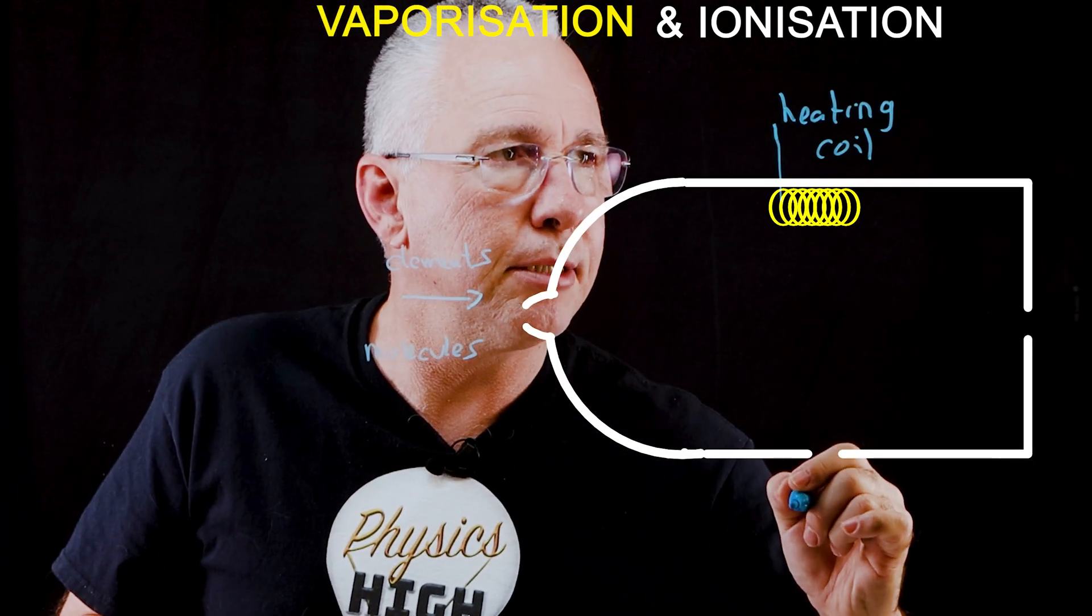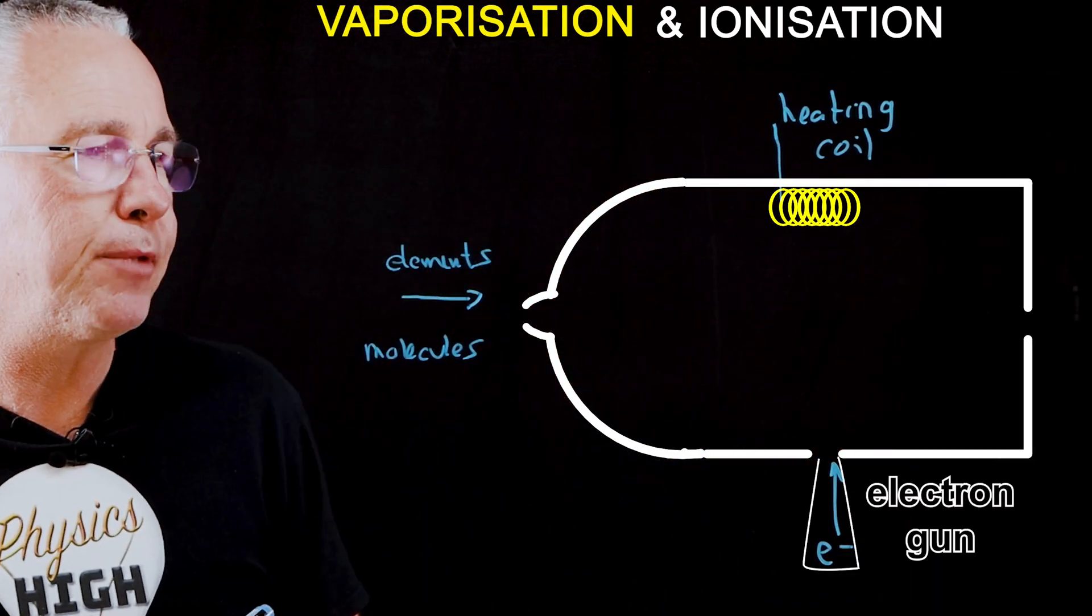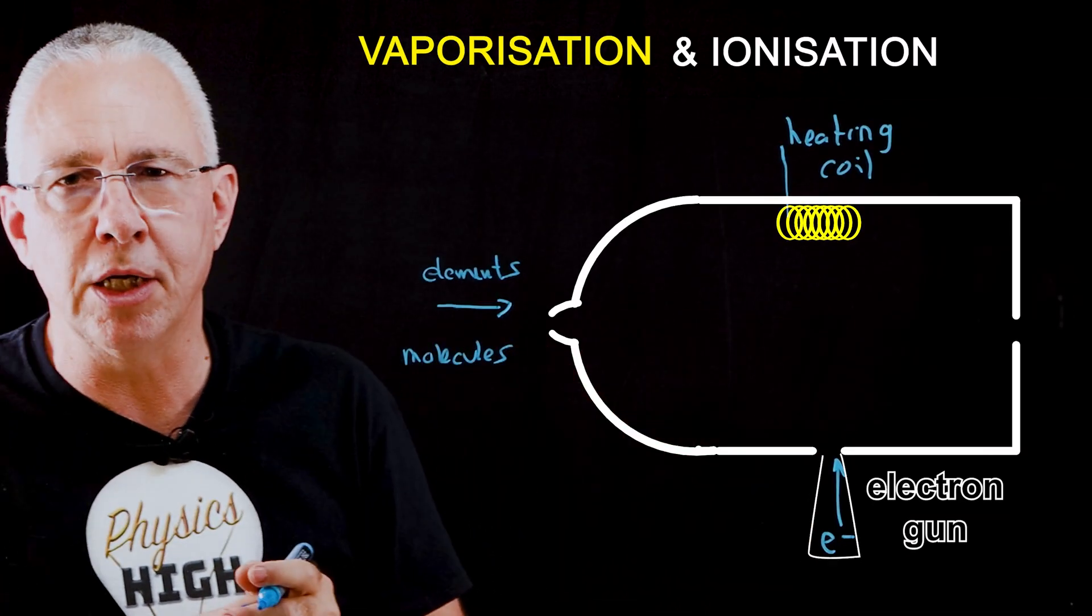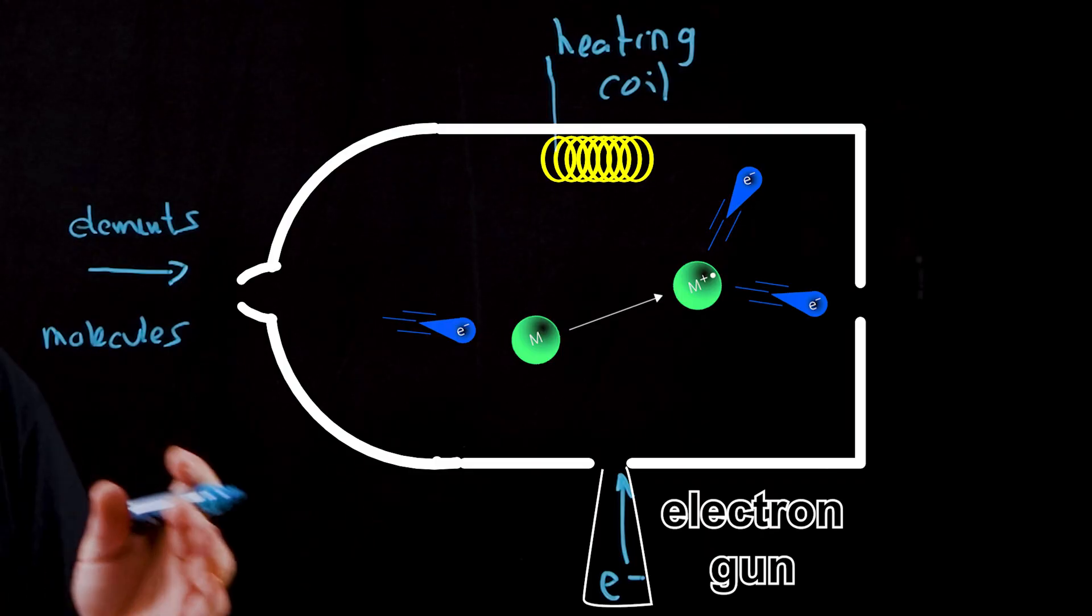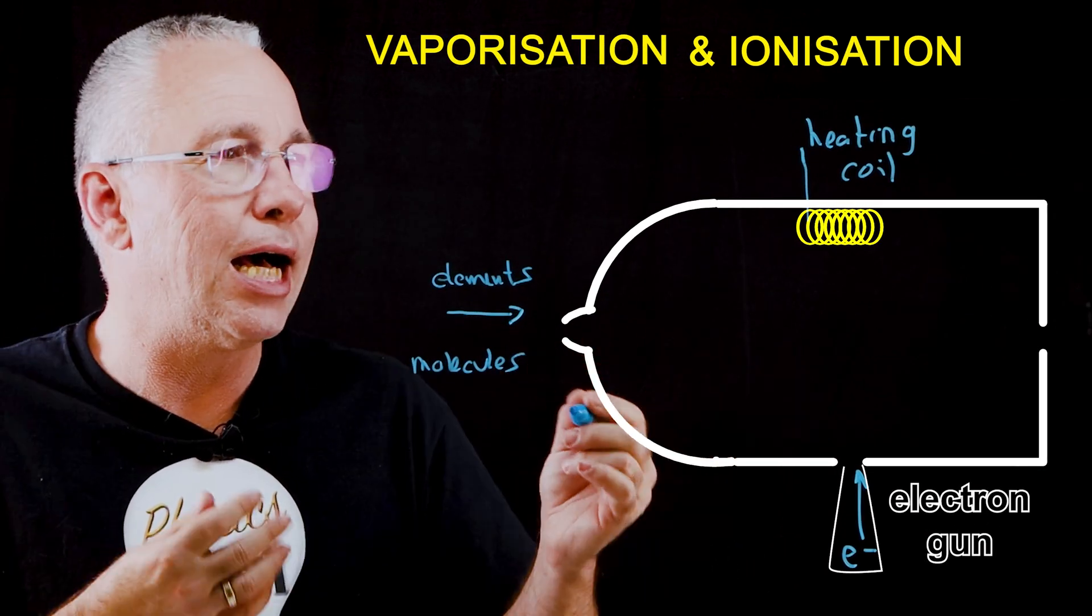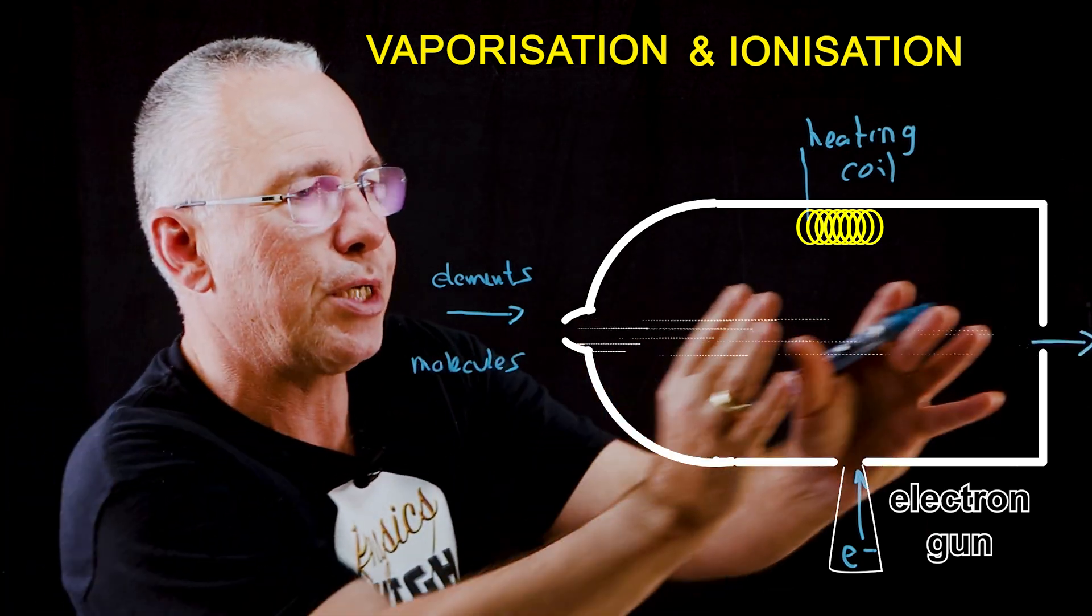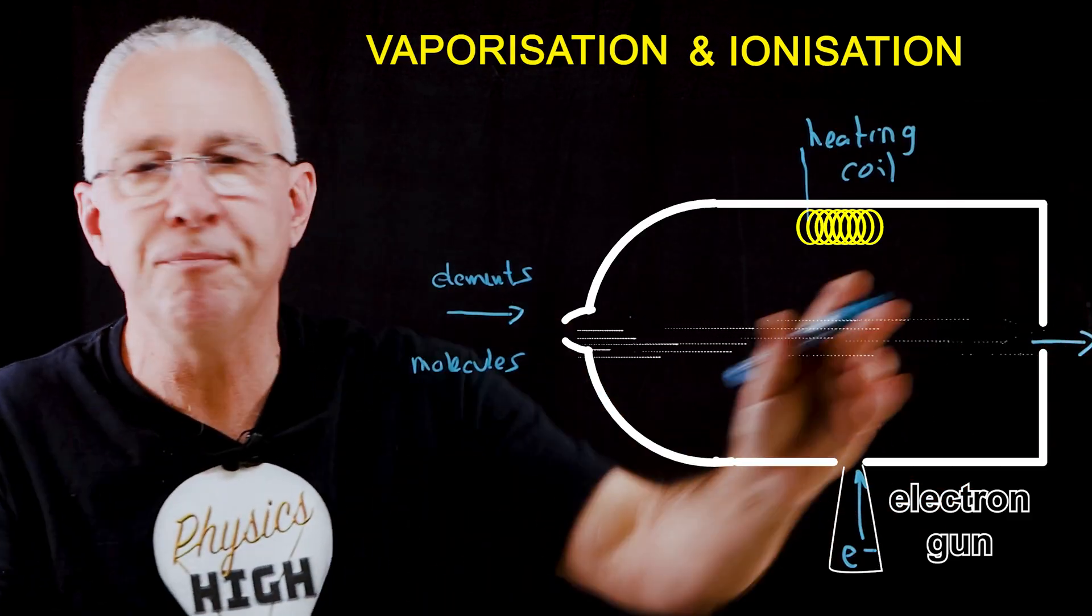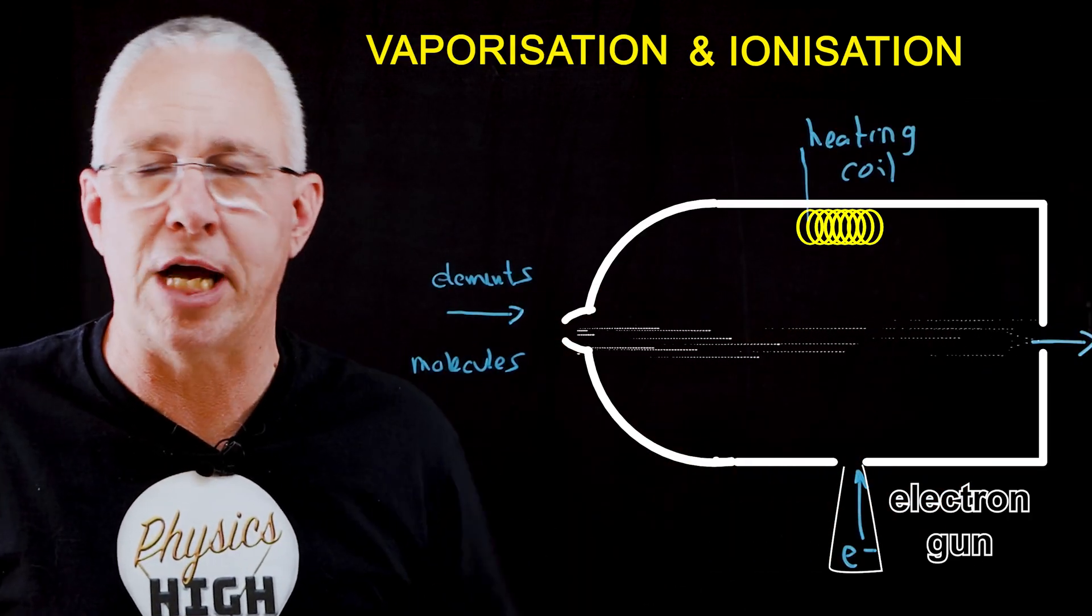But importantly, down the bottom, I have an injection of electrons. Now what these electrons do, as they interact with the atoms or molecules, they'll knock off an electron. And what that means is, now my molecules or atoms are now positively charged with a plus one. These particles are now moving, being charged through this chamber out of the other side. What happens as they leave this chamber?